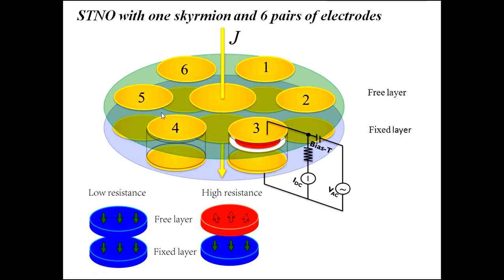One, two, four, five, and six. Note that the detection current should not be so large as to influence the motion of the skyrmion.